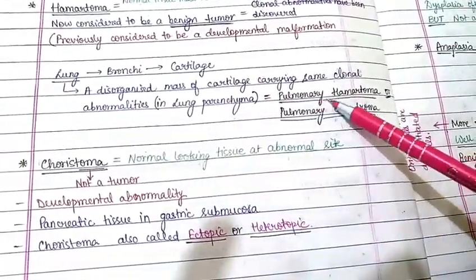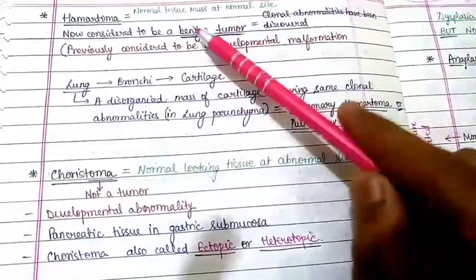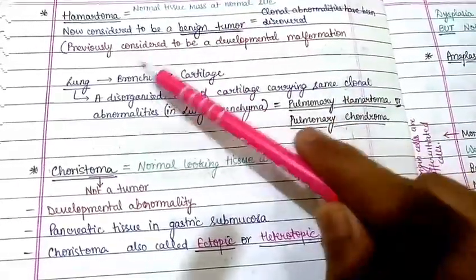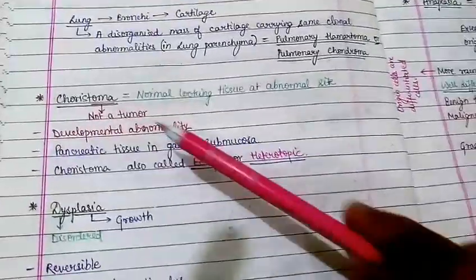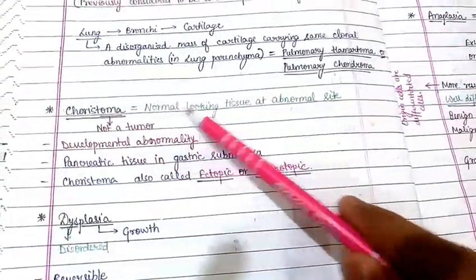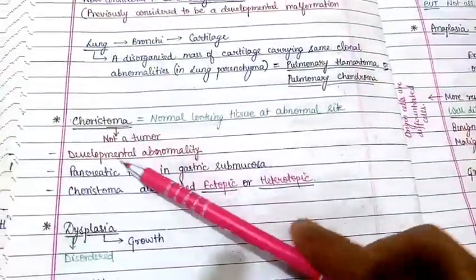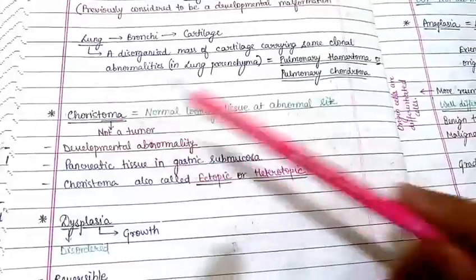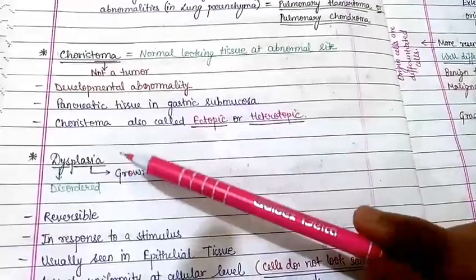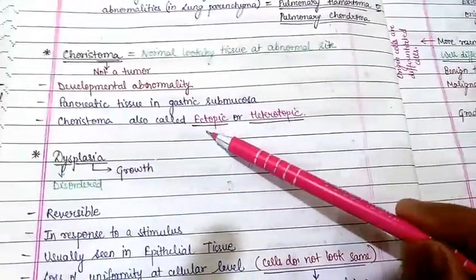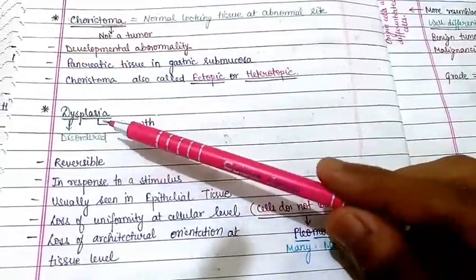An example of hamartoma: if bronchi in the lung has cartilage and a disorganized mass of cartilage carrying clonal abnormalities in lung parenchyma, this is known as pulmonary hamartoma or pulmonary chondroma. Choristoma refers to normal-looking tissue at an abnormal site. They are not tumors — they are developmental abnormalities. An example is pancreatic tissue found in gastric mucosa. Choristoma is also called ectopic or heterotopic tissue.